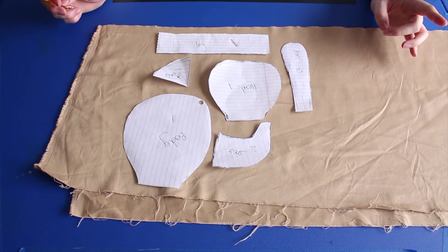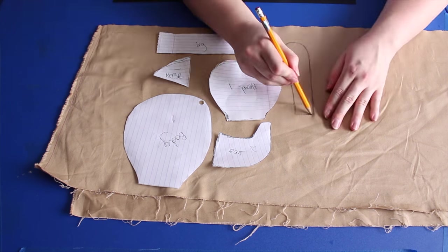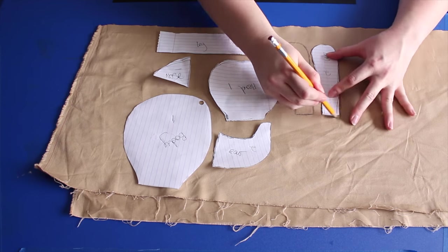Now I'm tracing out each item. For the arms and ears, I'm tracing out two.